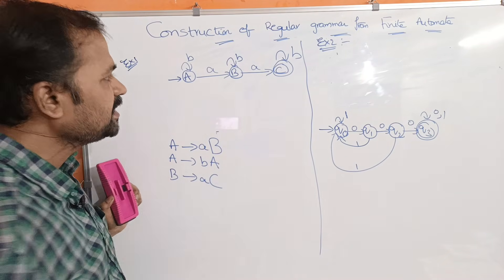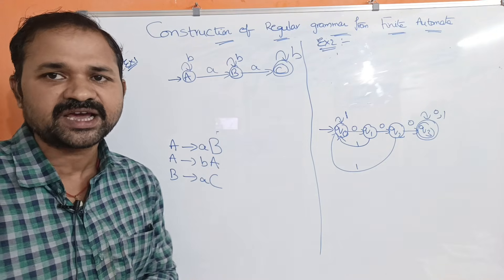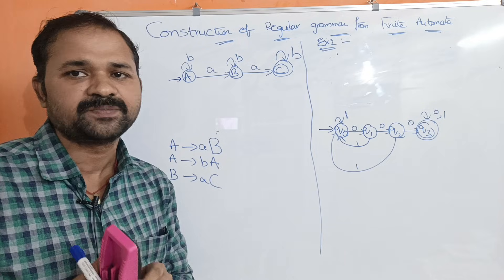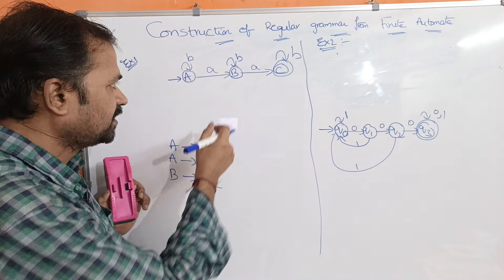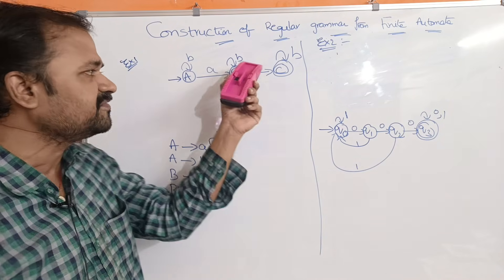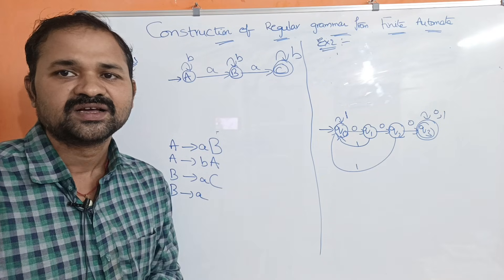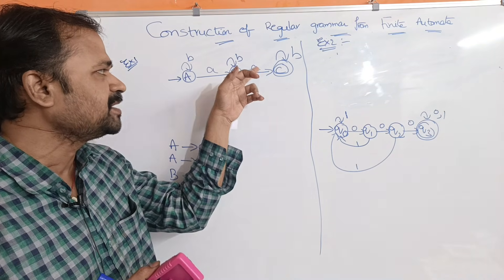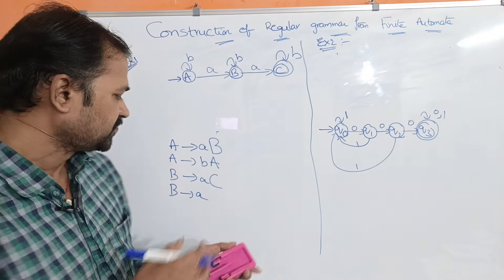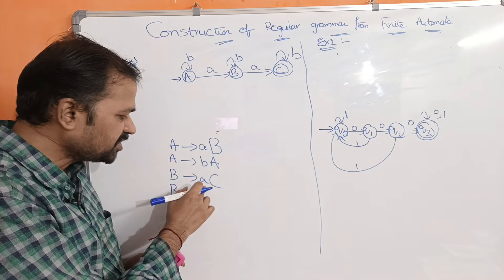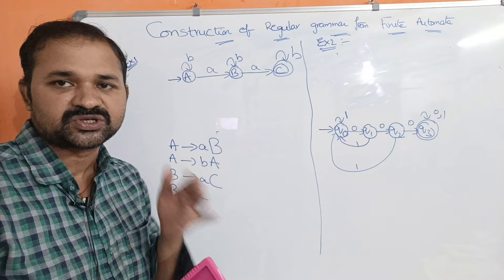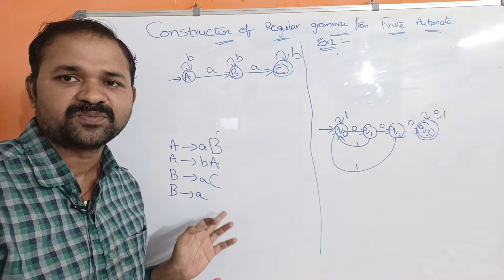Now let us see state B. B on a goes to C, and C is the final state. If we are reaching a final state by applying an input symbol, we write B implies aC. But since C is the final state, in addition to writing aC we also write just the terminal symbol — B implies a — meaning by applying input a on B we can reach the final state.